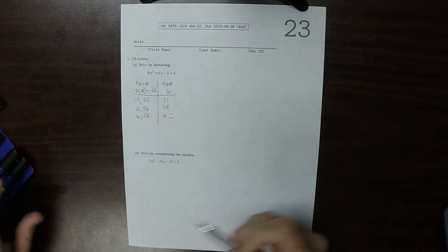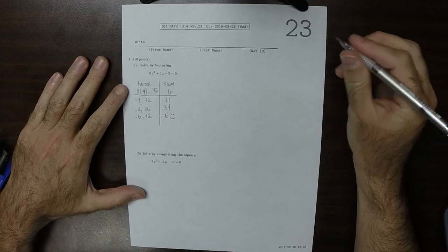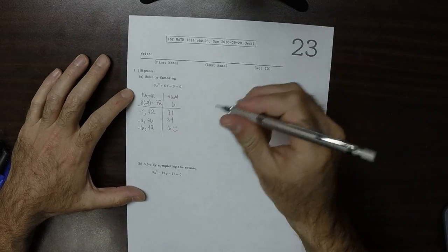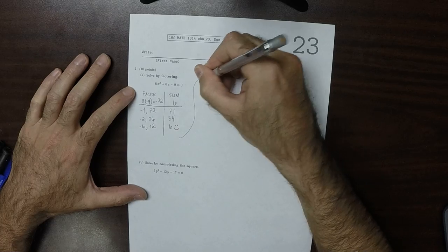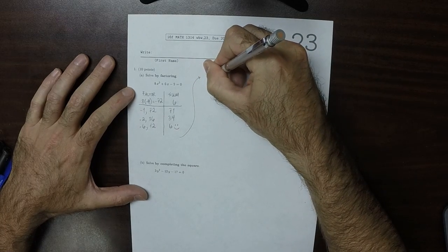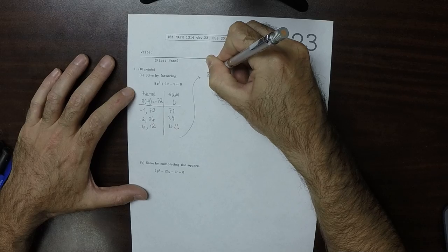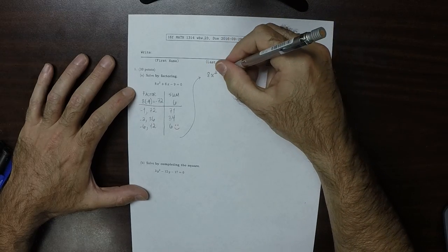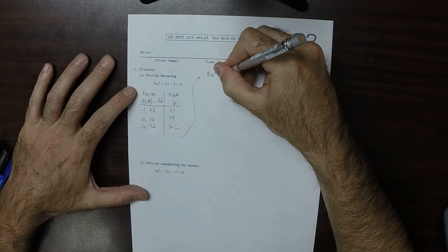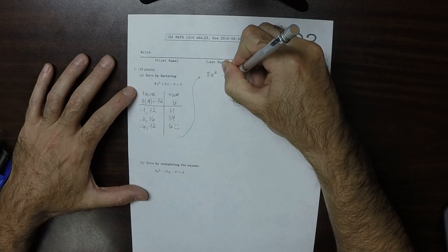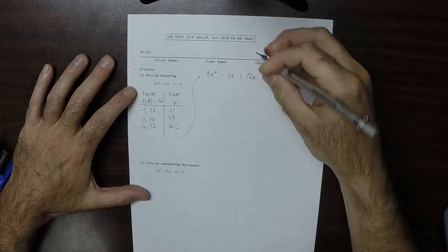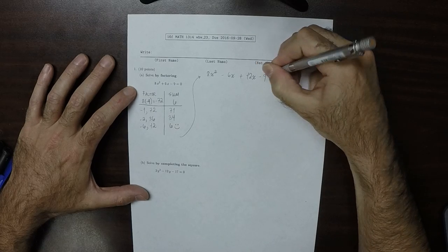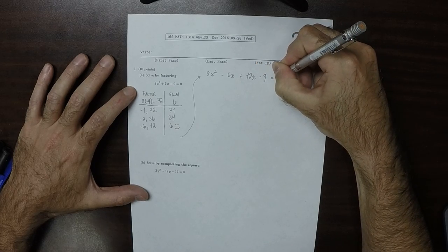So we found the numbers that we were looking for. As a result of this table, we'll group in the following way. This is 8x squared minus 6x plus 12x minus 9, equal to 0.